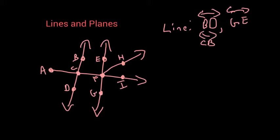All right, next is a ray. A ray is different from a line because it has an endpoint. It doesn't have two arrows, it has one point and one arrow. So the easiest ray to see would be ray AI.